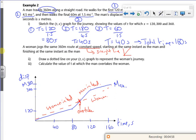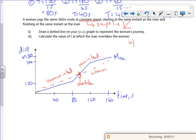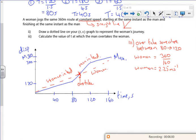How do we do that? Let's have a bit of a think with this one. We know the overtake is somewhere between 80 and 120. We know the woman's speed because that's constant. So the woman's speed is going to be 360 over 160. What's that going to be? 2.25. According to the calculator.